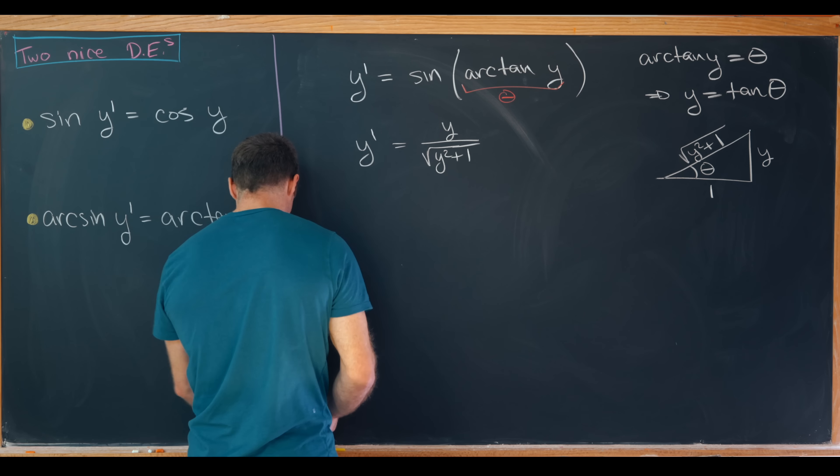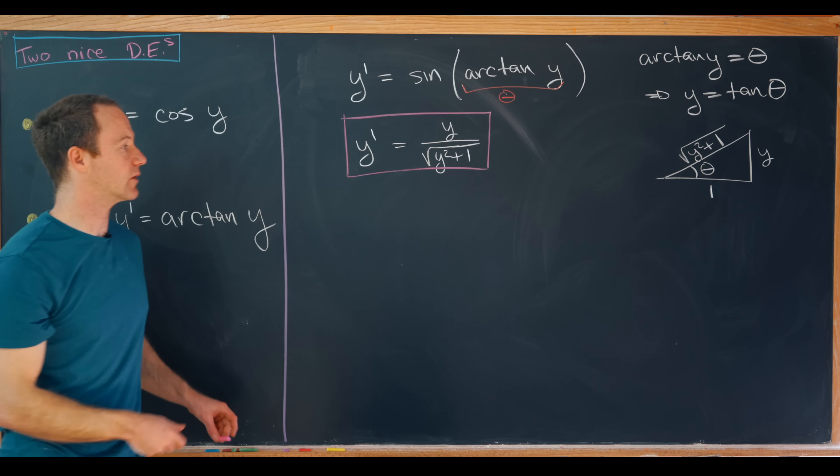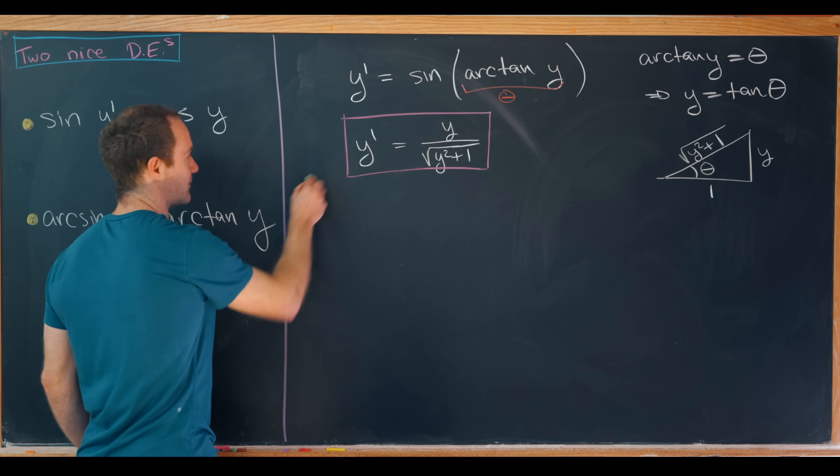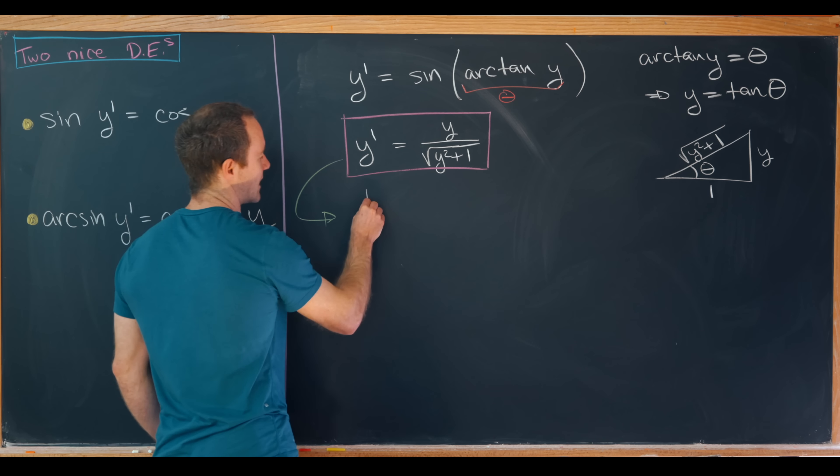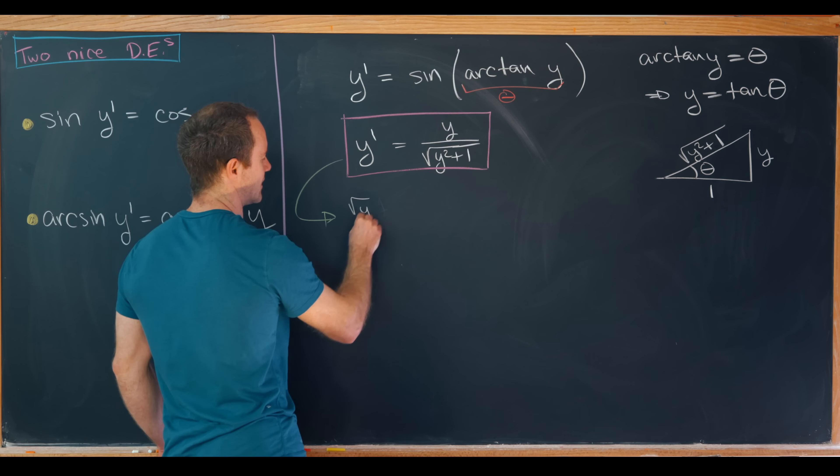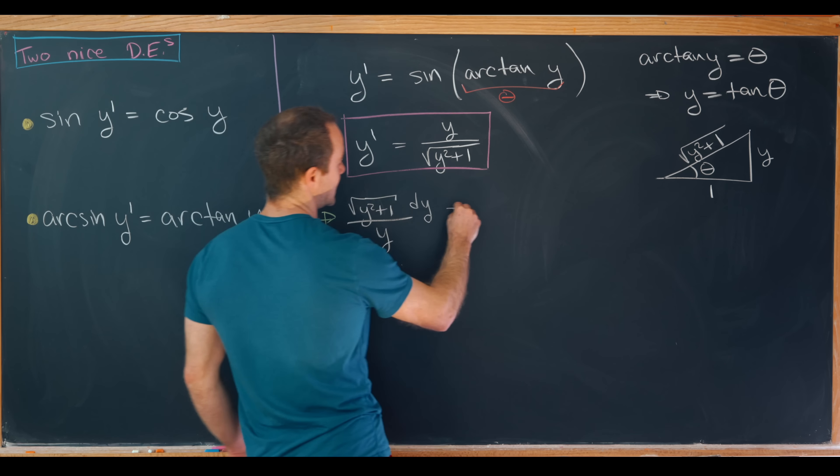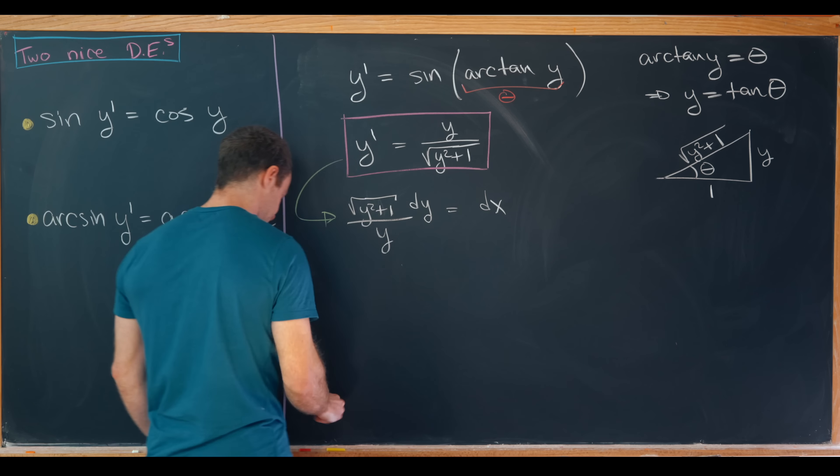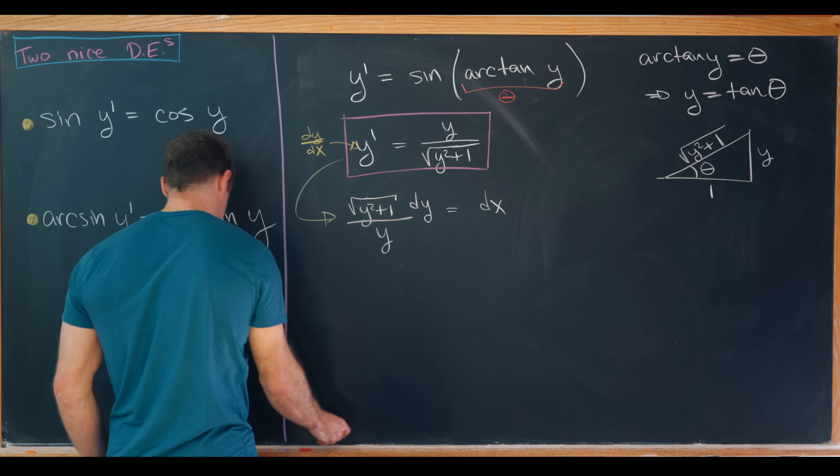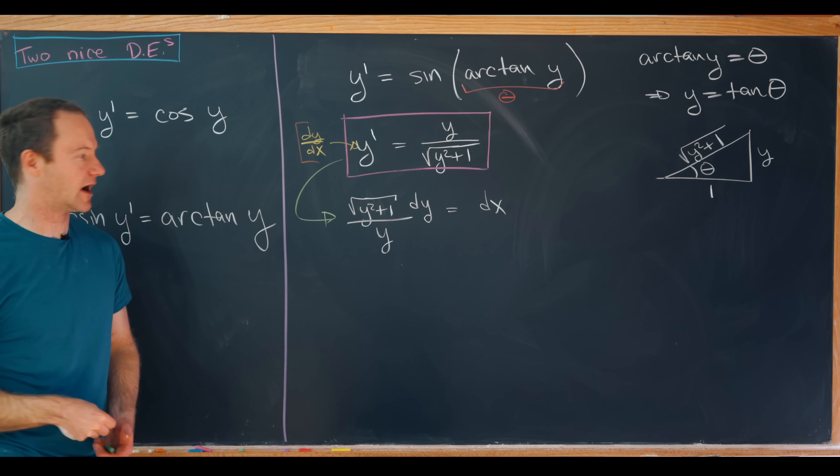So bringing this y prime down we've got this nice autonomous differential equation. And so we can solve this using the method of separation of variables. We'll write this as the square root of y squared plus 1 times dy over y equals dx. Where here what I did is I separated this y prime into dy by dx. Strictly speaking that's kind of sketchy but it works out in this case.